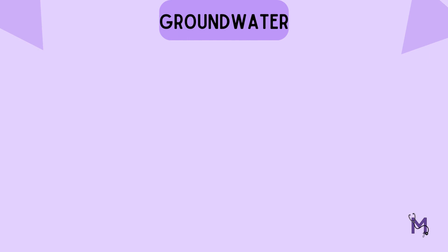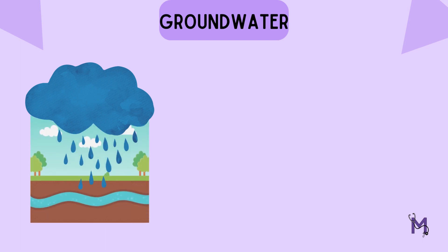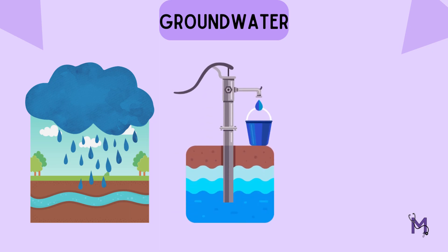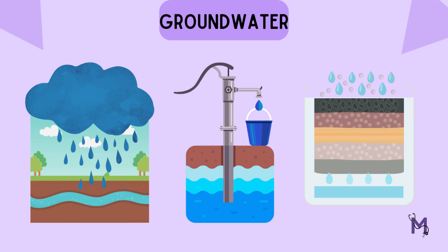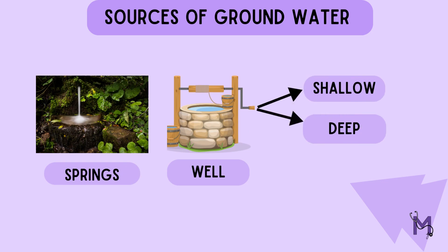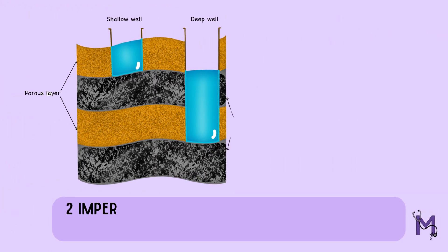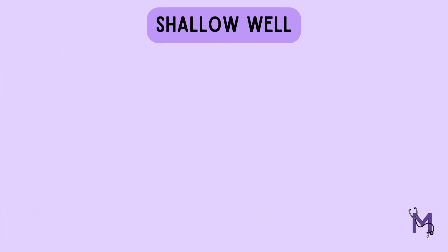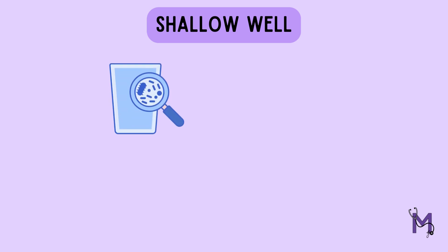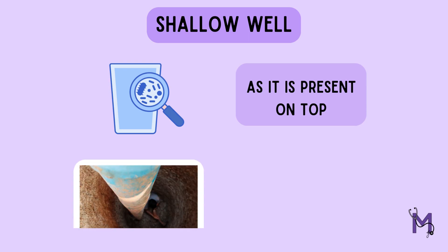After rain and surface water, our last source is groundwater. Groundwater, as discussed earlier, is the rainwater that seeps into the ground. Of all three, it is the most economic and practical source for providing water to small communities. It is superior to surface water since it provides an effective filtering medium. The usual sources of groundwater are springs and wells, which could be shallow and deep. As you can see in this image, two impervious layers are present, which are layers that do not allow the further penetration of water into the underlying ground layers. In the case of shallow wells, it extracts water present above the first impervious layer. The water is usually contaminated since it is present on the top and is also hard.